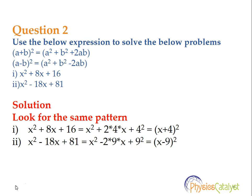Now let's take a look at the next part: x squared minus 18x plus 81. This can be written as x squared minus 2 into 9 into x plus 9 squared. Here a is equal to x and b is equal to 9, so we can write that as x minus 9 whole squared.